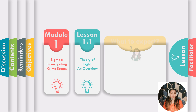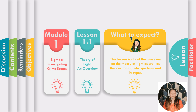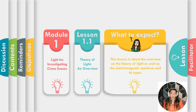We are in Module 1: Light for Investigating Crime Scenes, Lesson 1.1: Theory of Light and Overview. A crime scene examination is a key step in every investigation. To analytically interpret the information carried by material evidence, proper screening of the crime scene must be performed and traces must be individuated, identified, and collected. The human eye is only sensitive to visible radiation, and since many traces are invisible to the naked eye, various types of illumination and visualization techniques further aid the activity of the examination teams. This lesson is about the overview on the theory of light as well as the electromagnetic spectrum and its types.